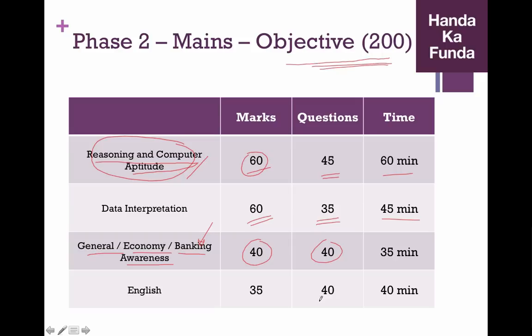On the other hand, for English, there are going to be 40 questions and this should have been 40 marks. So this will also be for 40 marks. So the total marks, as you can see, is 200.